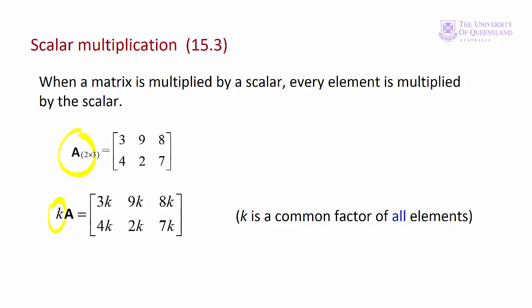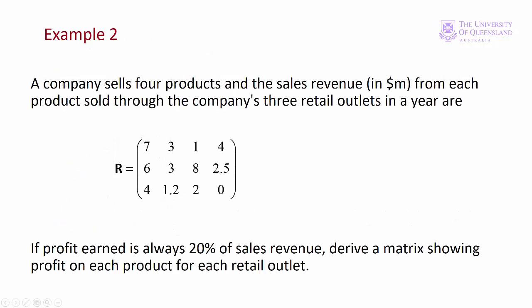Let's look at an example. A company has three retail outlets and four products, and the sales revenue is represented in this matrix R. So the columns are the products and the rows are the outlets. We have the revenue and we know the profit is 20% of the sales revenue. We want to find a matrix showing the profit on each product for each retail outlet.